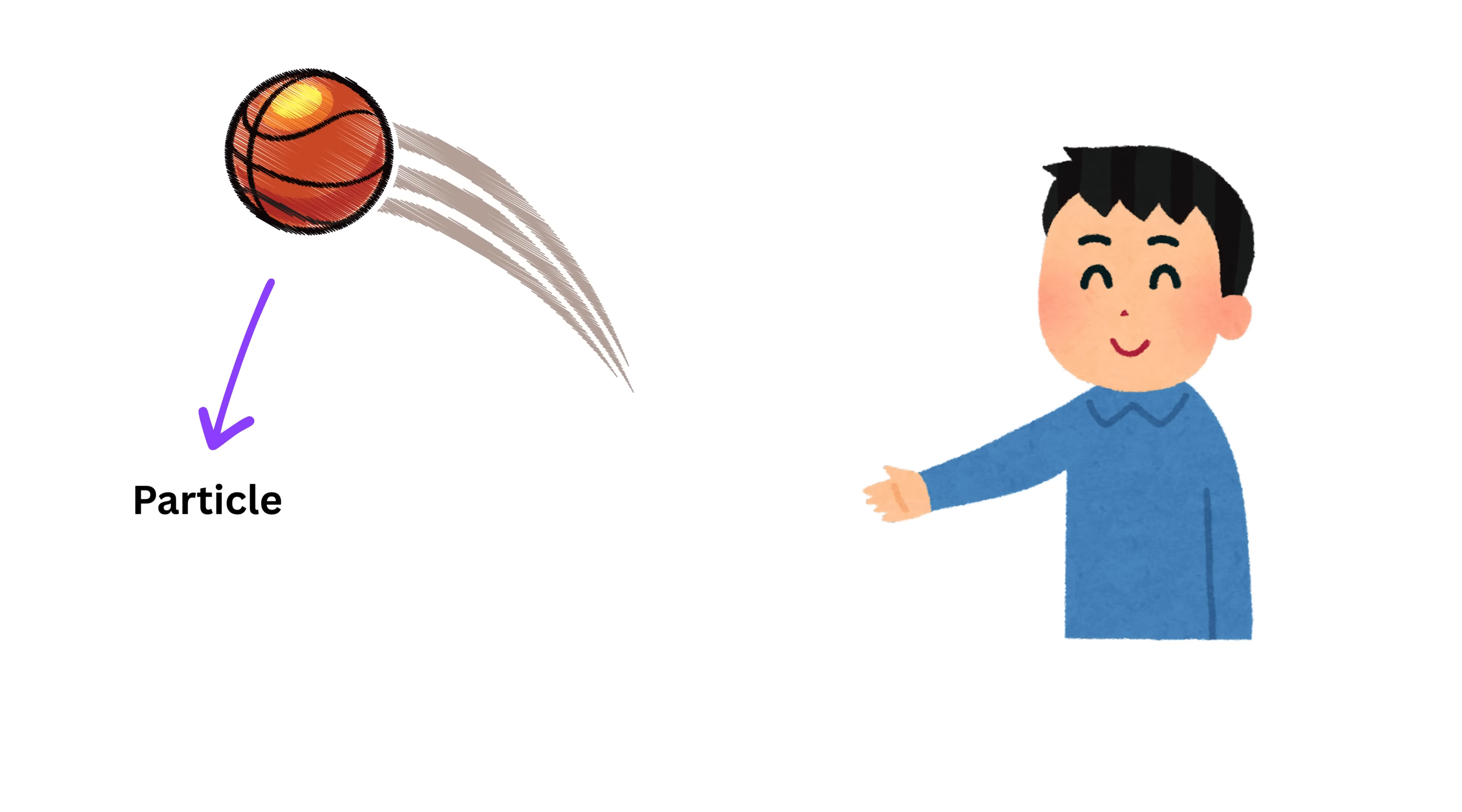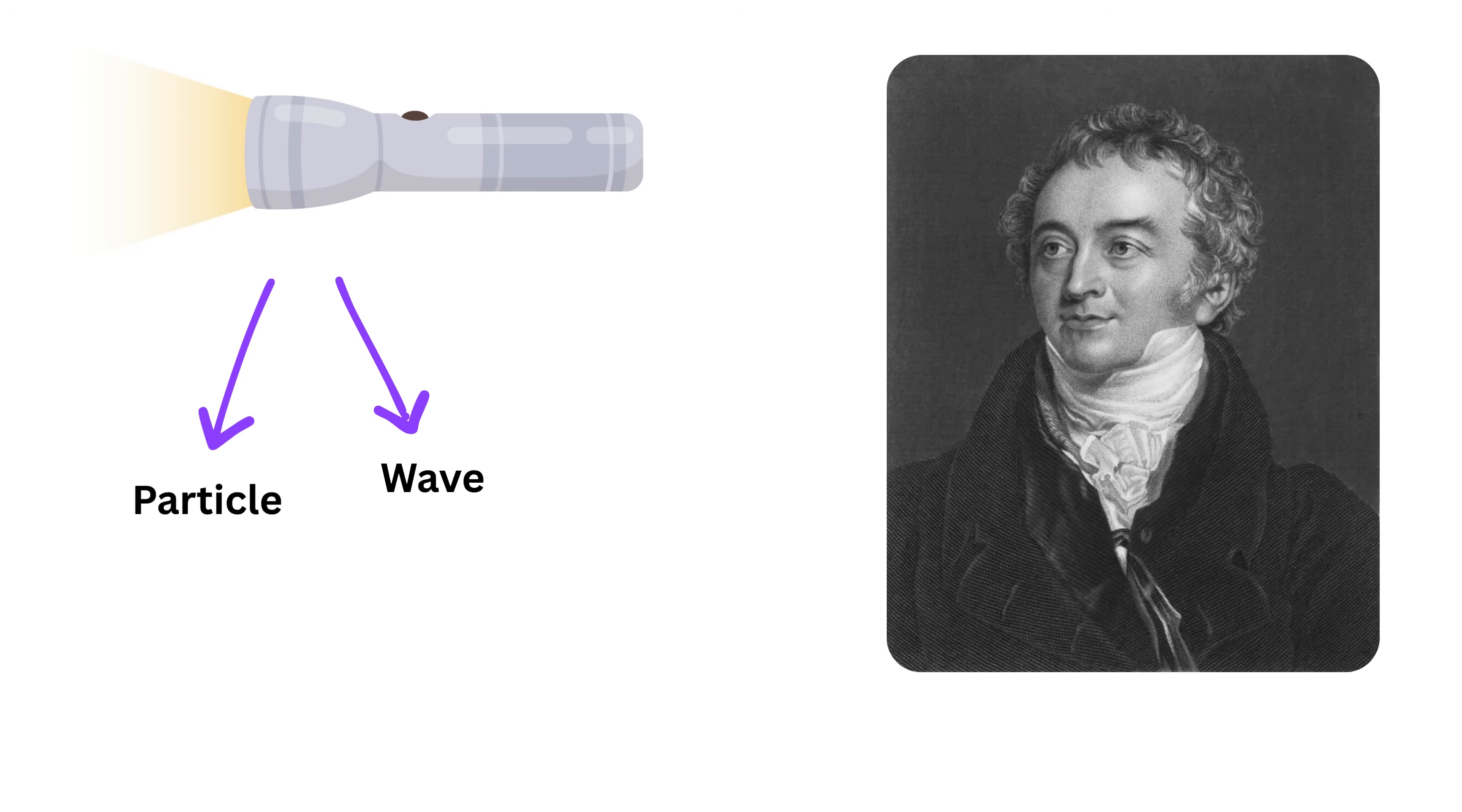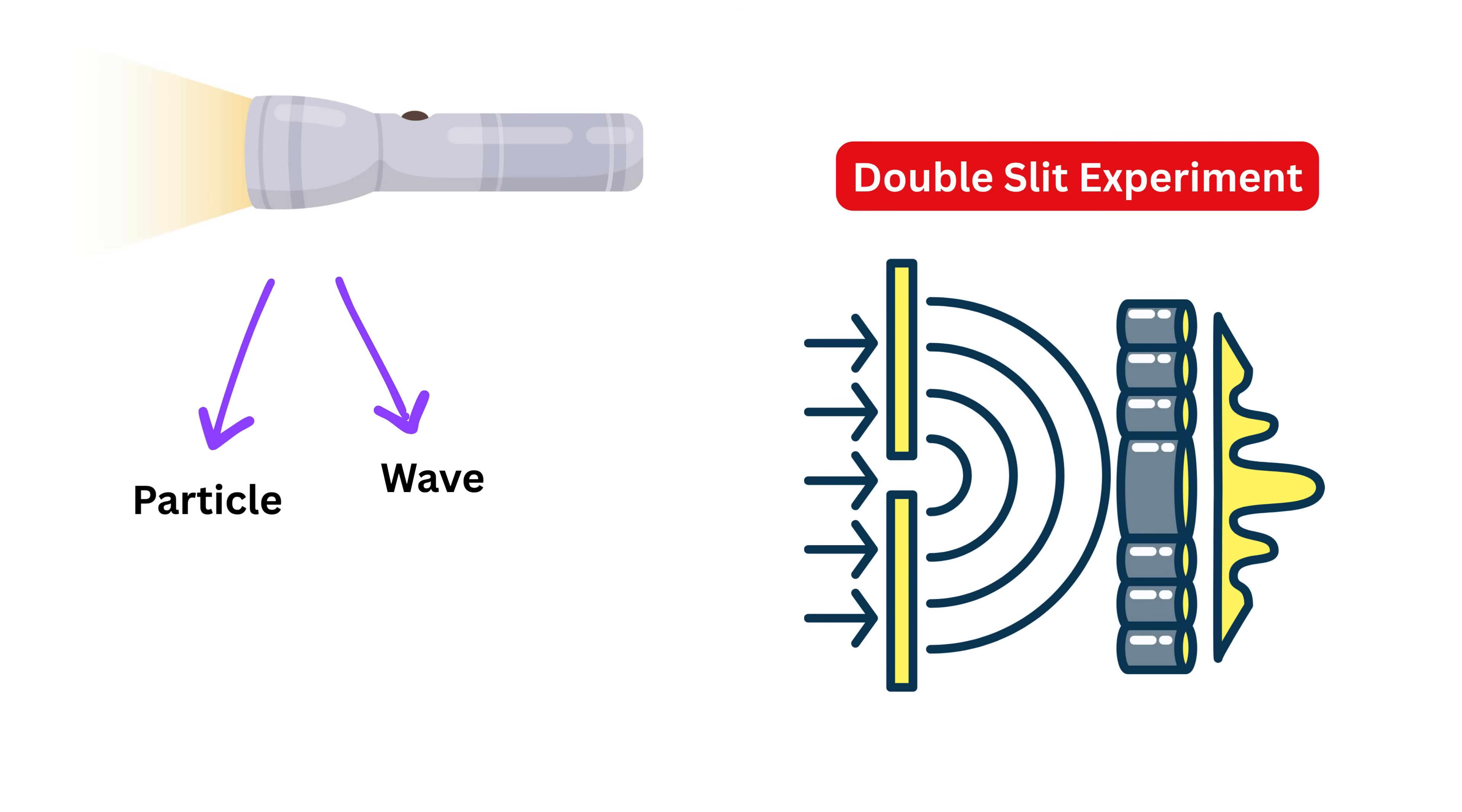Everything in the universe behaves like both a particle and a wave. For centuries, scientists wondered: is light a wave or a particle? Around the 1800s, a physicist named Thomas Young, using his famous double slit experiment, showed that light creates interference patterns like water waves.